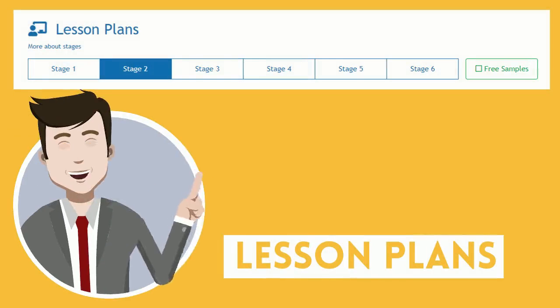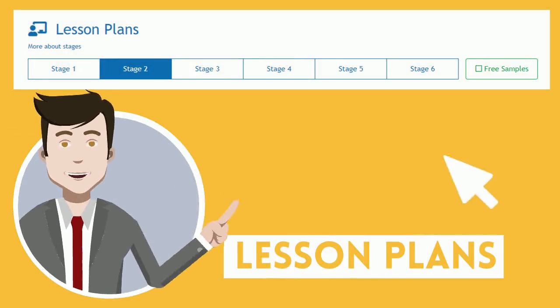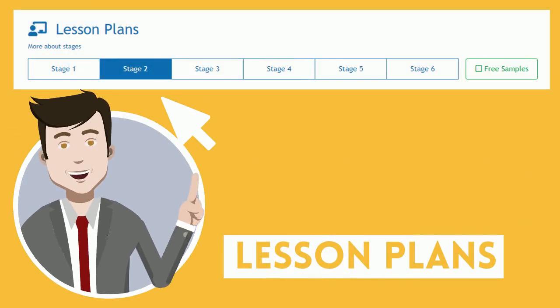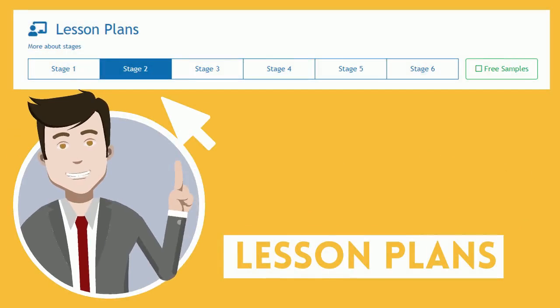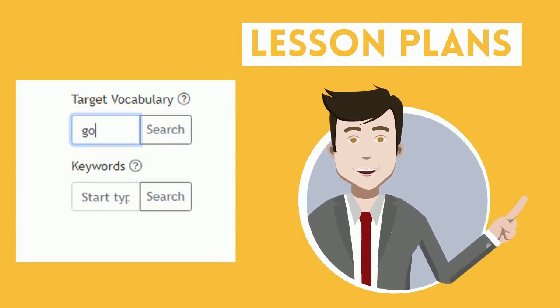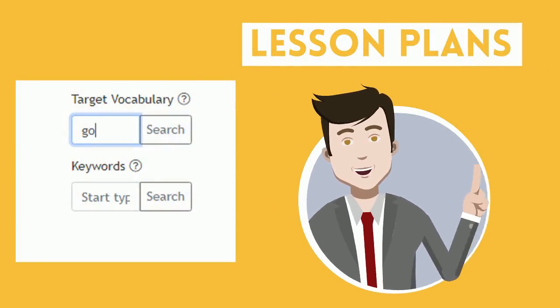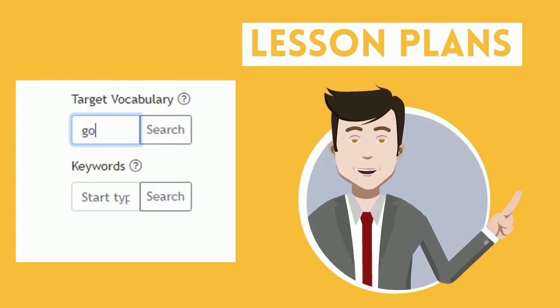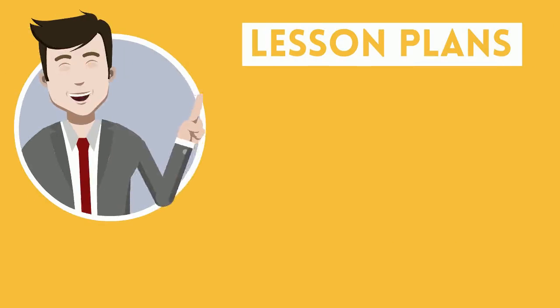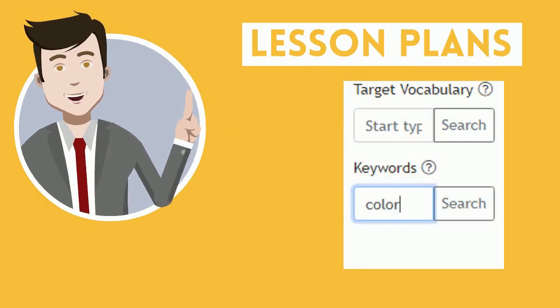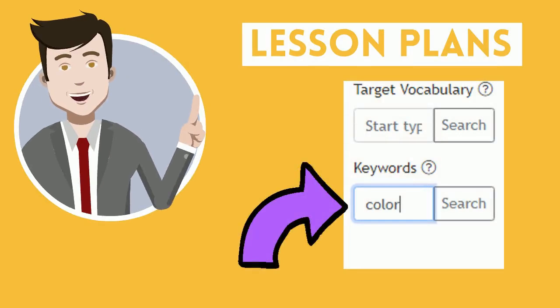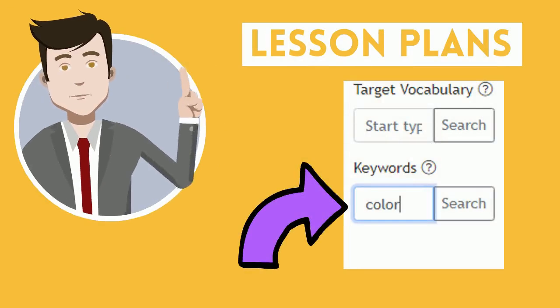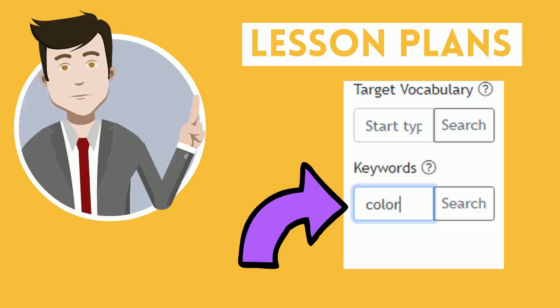Be sure the stage you are working with is chosen at the top menu bar. Use this box to search for specific words that are target vocabulary in lesson plans. You can also search in lessons for concepts such as colors or shapes. Be sure to clear a search before starting a new one.